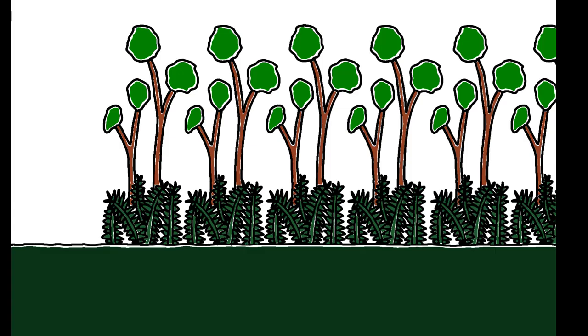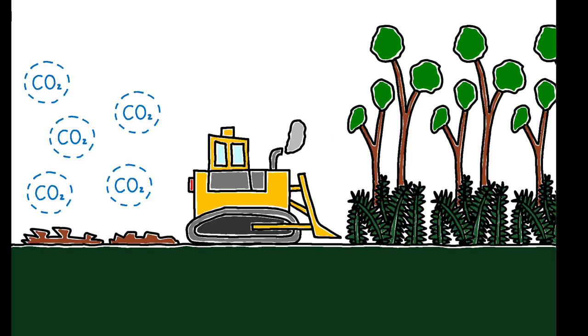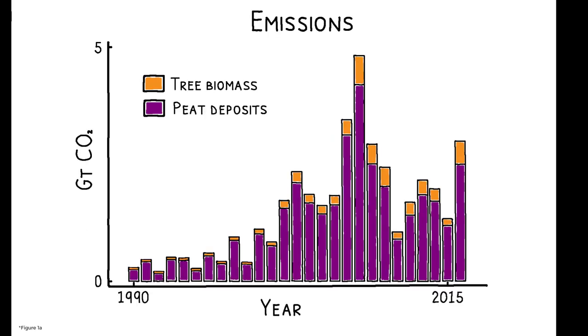Both countries contain peatland forests that release large amounts of carbon when cleared for palm oil plantations. Indeed, emissions from peat deposits exceed those from tree biomass by 5 to 10 times.